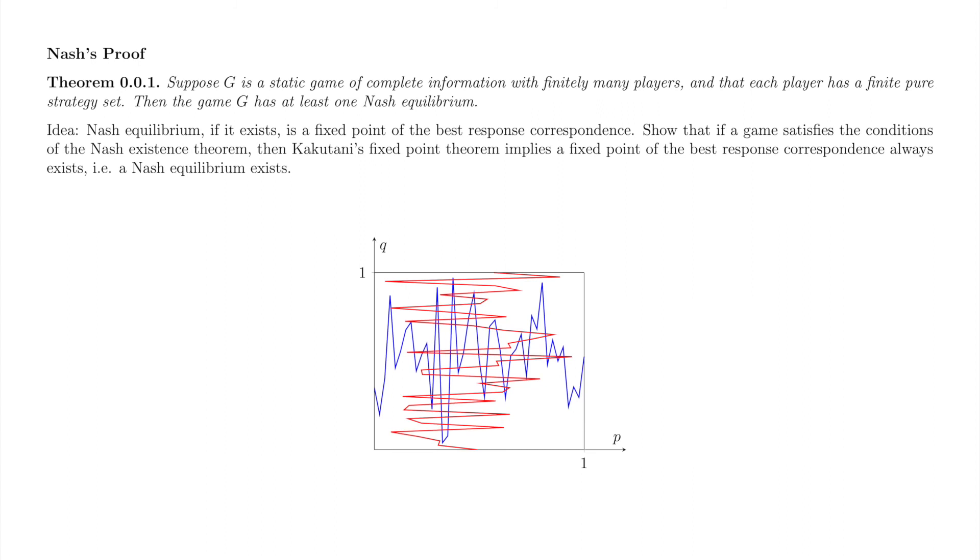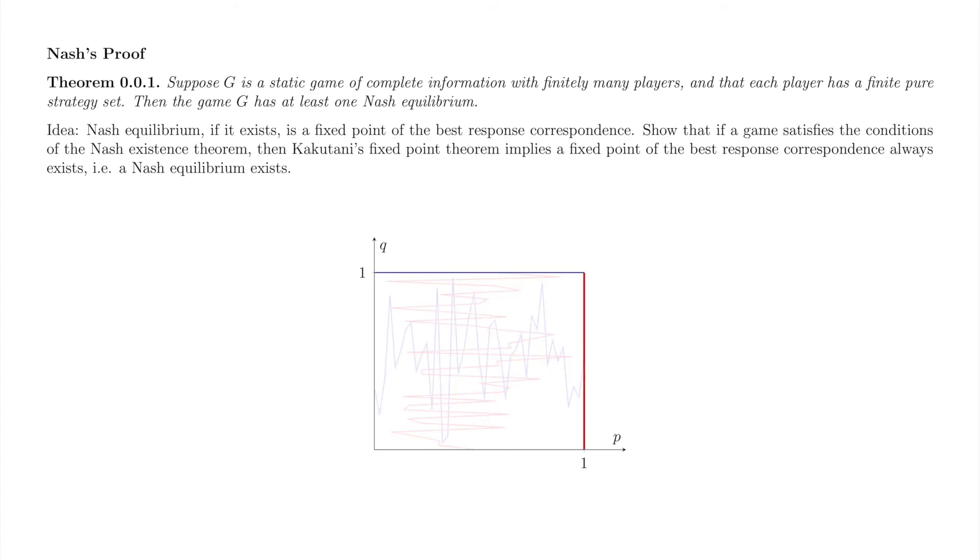Here are some squiggly functions that have lots of intersections. We need to try to push our functions to edges and corners if we wish to avoid intersections. We did our best. We pushed the blue function to the top of the box and the red function to the right. Still, they intersect at 1-1.